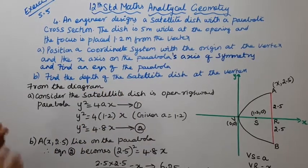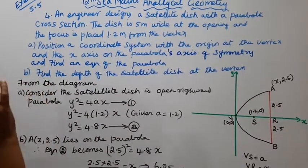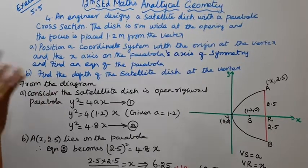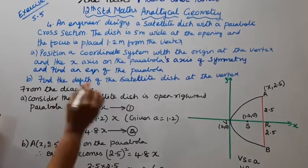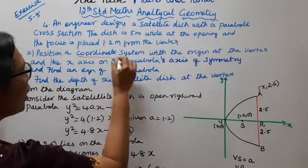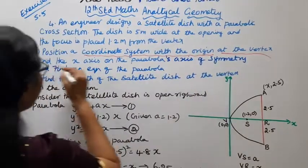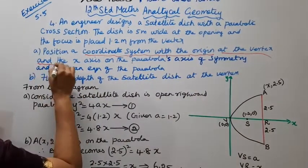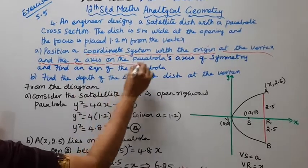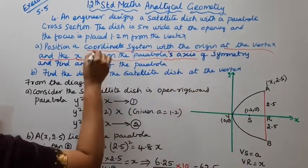Equation of a parabola — for the equation of a parabola there are 4 standard formulas. Coordinate system with the origin at the vertex and the x-axis on the parabolic axis.